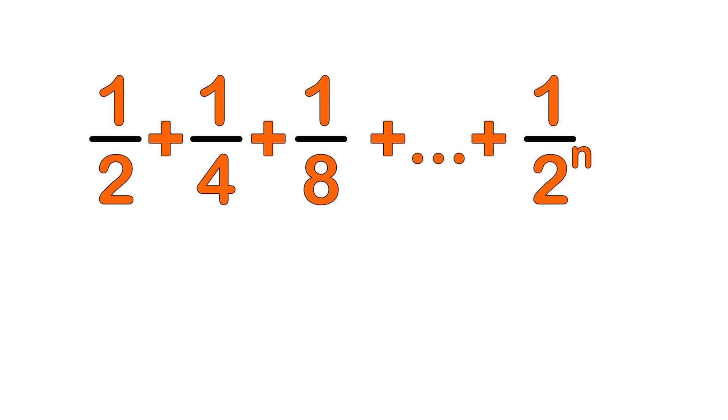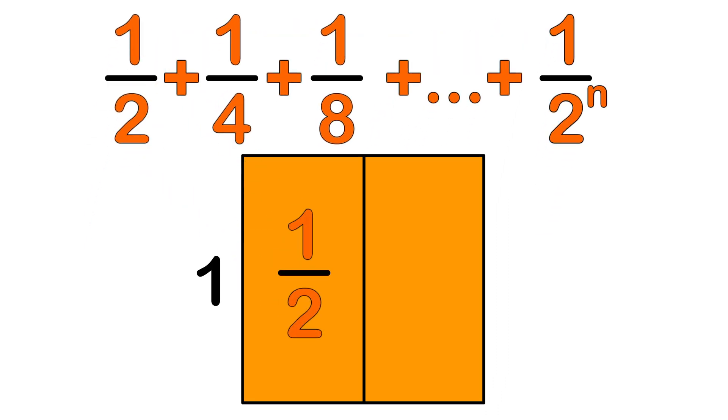If you take a shape with a length of 1 and cut each piece in half repeatedly it represents the terms of the infinite series. Altogether the area of the pieces is 1 so the infinite series converges to 1.